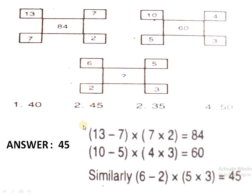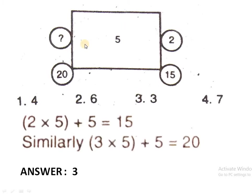Next pattern: 5 is the middle number. The number 2 is given and the result is 15. The operation: multiply 5 × 2 = 10, then add 5 again to get 15. Applying the same formula with 3: 5 × 3 = 15, then add 5 to get 20. So 3 is the missing number and option 3 is the correct answer.